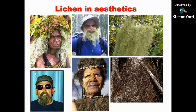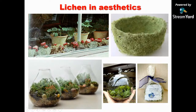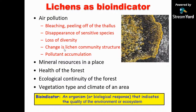Lichens are also sometimes used aesthetically — people wear them during traditional festivals. One of the important roles of lichens is as bio-indicators. They indicate air pollution and also indicate mineral resources in a place. For example, if an area has a lot of copper, lichens look bluish in color. Based on the presence or absence of lichens, you can assess the health of a forest, ecological continuity, and vegetation type. In air pollution, if a lichen is growing in a polluted area, it bleaches, changes color, and starts peeling off from the substratum. Sensitive species disappear and you can observe a loss of diversity and change in community structure. Moreover, lichens have the ability to accumulate pollutants in them.